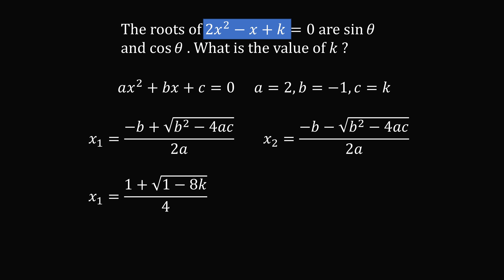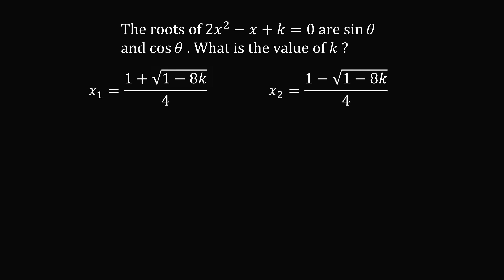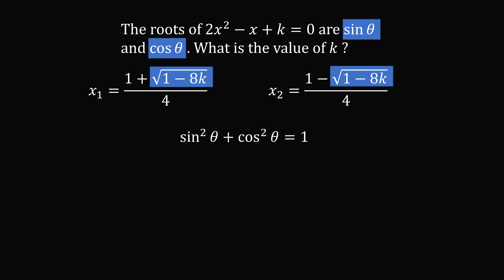One root is equal to 1 plus the square root of 1 minus 8k, all over 4. And the other root is 1 minus the square root of 1 minus 8k, all over 4. Since the roots have square roots, we want to eliminate them by squaring somehow. We know the roots are equal to sine theta and cosine theta, so we use sine squared theta plus cosine squared theta equals 1.